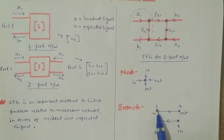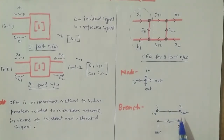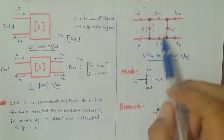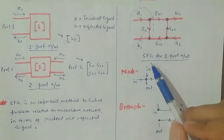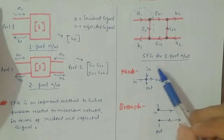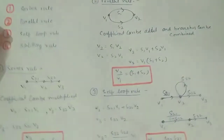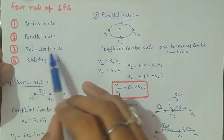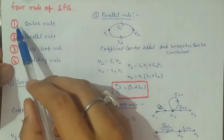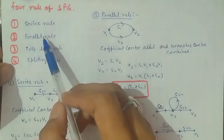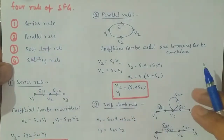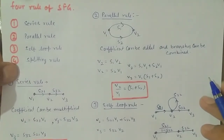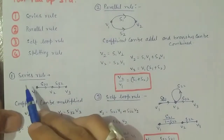To solve any two-port network or any SFG, there are certain rules. The four important rules for a given SFG are: series rule, parallel rule, self-loop rule, and splitting rule. I will explain these one by one and show how to use all four rules to solve any signal flow graph for a given microwave network.